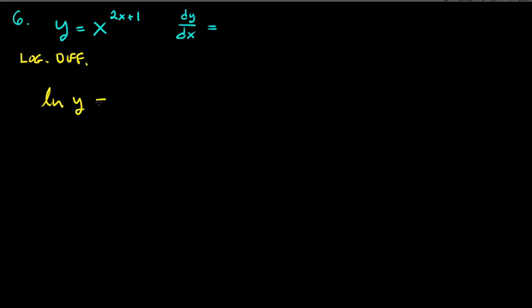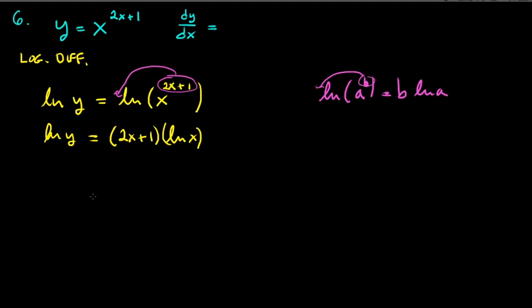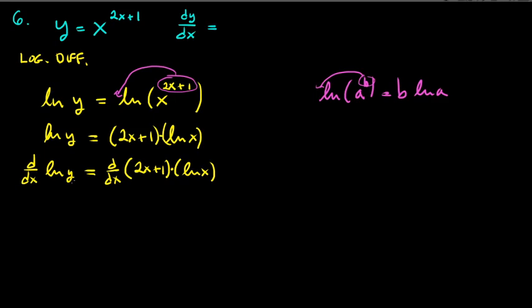Take ln of both sides: ln(y) = ln(x^(2x+1)). Using the log power rule, the exponent comes down in front: ln(y) = (2x+1)·ln(x). Now we can take the derivative. The left side by the chain rule gives (1/y)·(dy/dx). The right side is a product, so we use the product rule: first times derivative of second plus second times derivative of first.